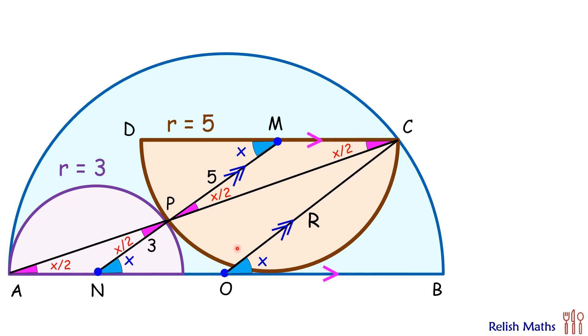Now as NM and OC are parallel and MC and NO are parallel, that was given, thus opposite sides are parallel. It's a parallelogram, that is OCMN is a parallelogram, and thus the opposite sides will be equal.